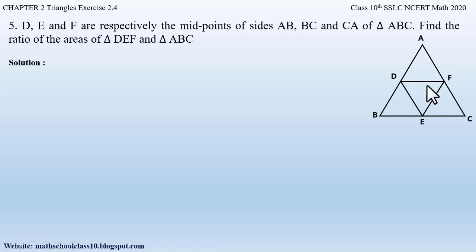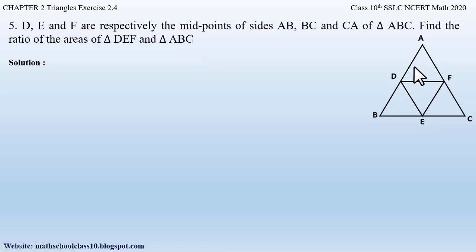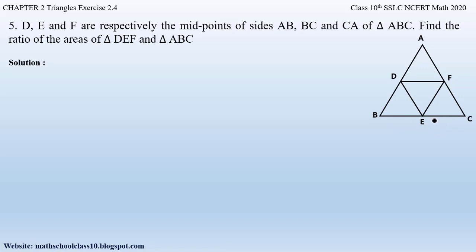To find the ratio of the two triangles, we can apply theorem 2.6, but there is a condition: the two triangles must be similar. So we have to show that triangle DEF is similar to triangle ABC. If you observe the question, there is no other hint given that we can use to prove DEF is similar to triangle ABC.